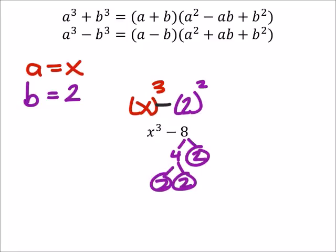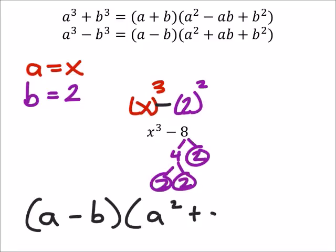This one specifically is subtraction, so subtraction will be in that first parentheses. Let's set that up: we've got a minus b, and we've got a squared plus ab plus b squared.